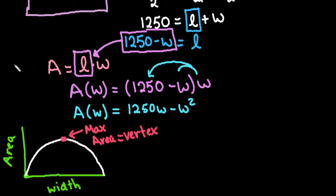And if you recall, the vertex is always at negative B over 2A comma whatever your function is. In this case we would say A of negative B over 2A. So it's just the Y coordinate. In this case our X coordinate would be the width and our Y coordinate would be the area.